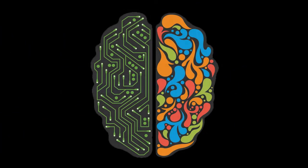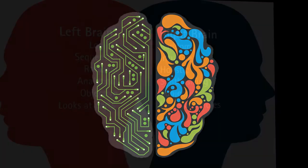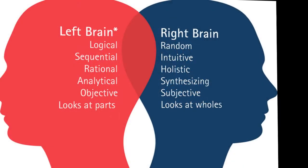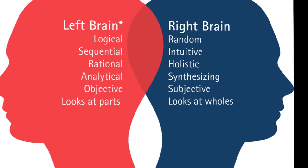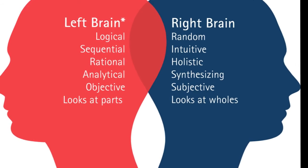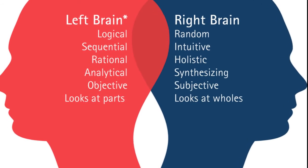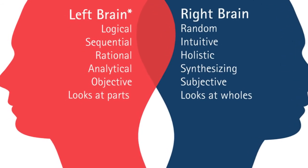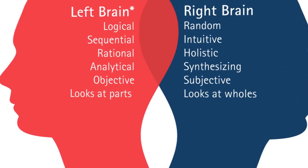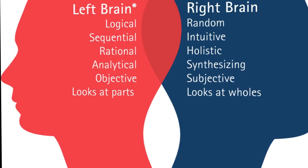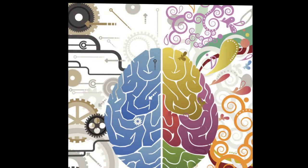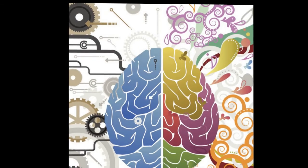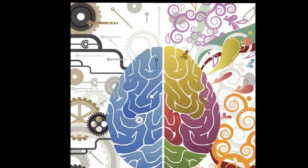Number 1: Brain Lateralization. The left hemisphere is responsible for analytical thought, including structure, rules, time, logic, mathematics, planning, words, speech, and physical activity, as well as the right side of the body.